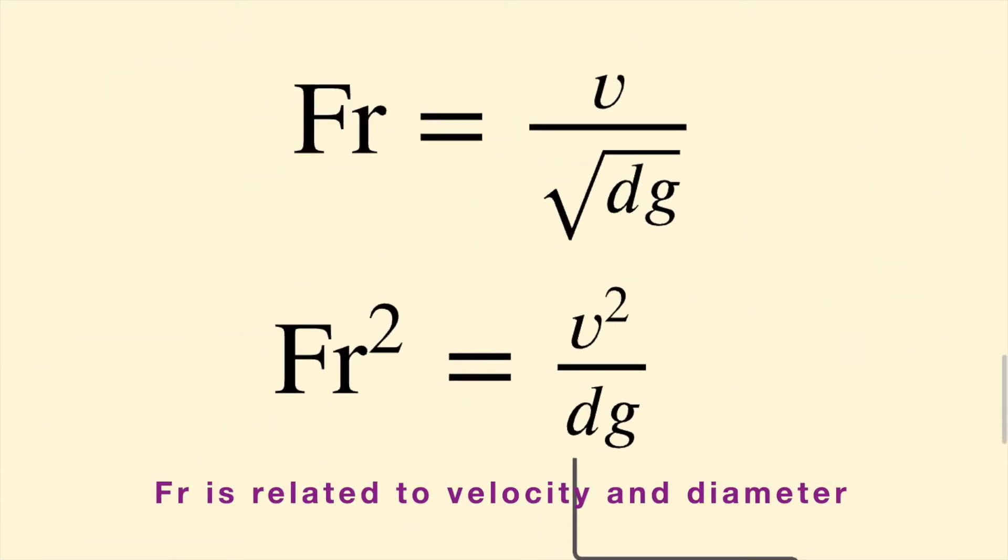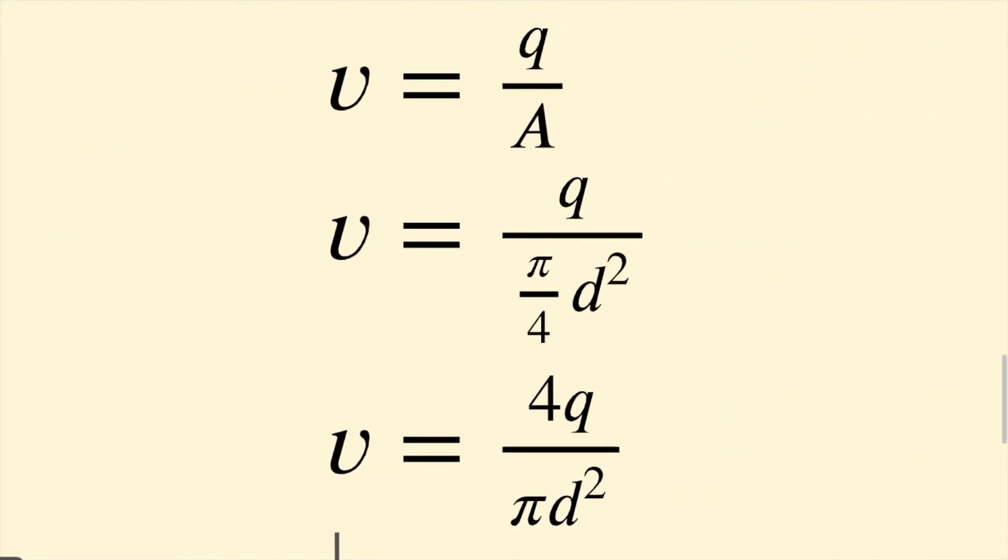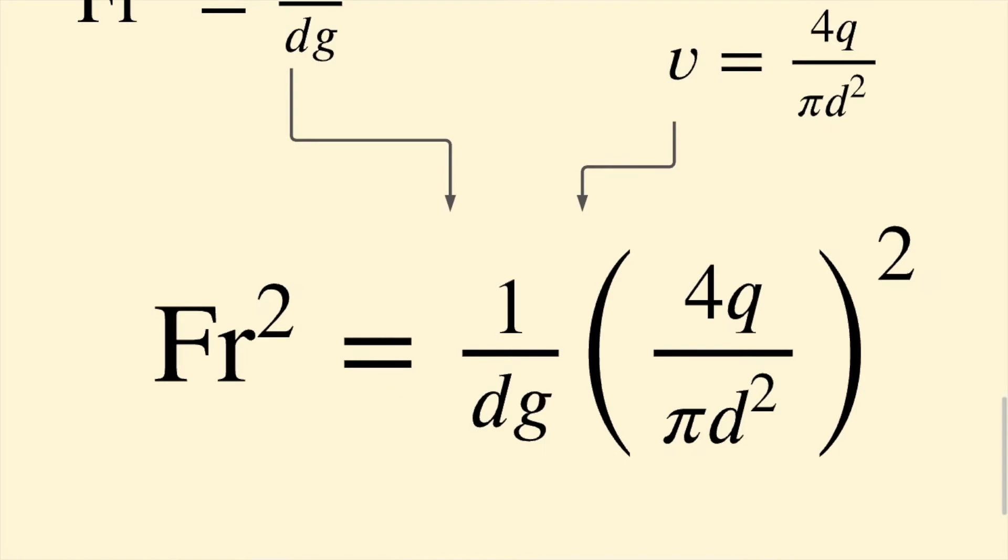The Froude number is defined by the superficial velocity in the pipe, the diameter, and gravity. The superficial velocity is defined by the volumetric flow rate and the pipe diameter. We combine these two results to get a useful equation, but we need to clean up the math and write this as a design equation for diameter.